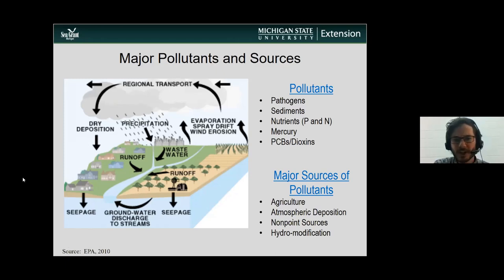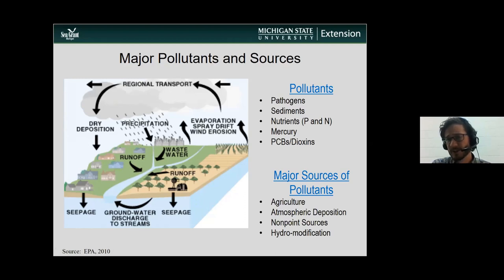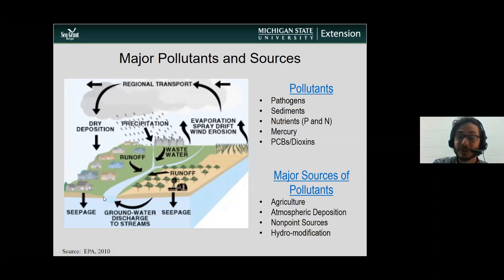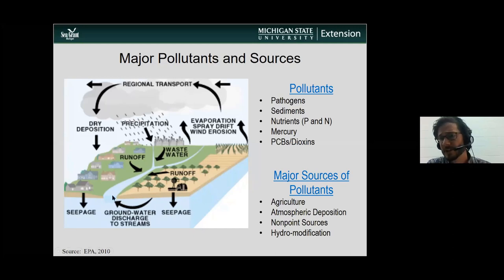There are lots of ways that pollutants move across the landscape — through overland runoff, through seepage. As things seep into the groundwater, that groundwater may end up discharging into a surface water at some point. This is how we can have one contaminated area over here and still contaminate a water body far away.